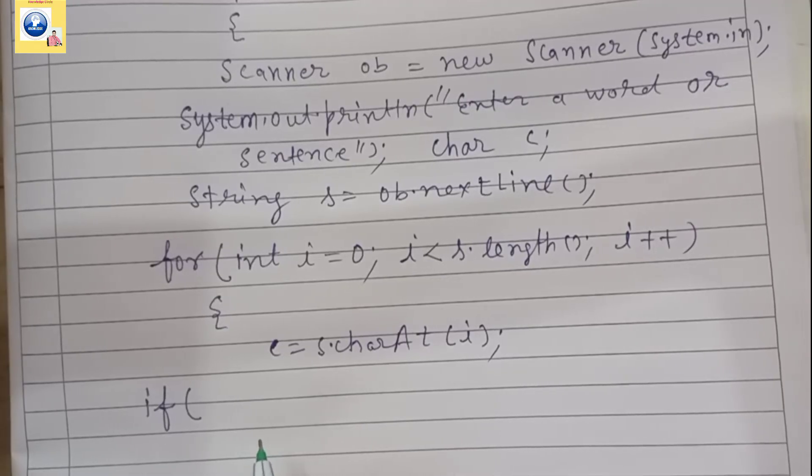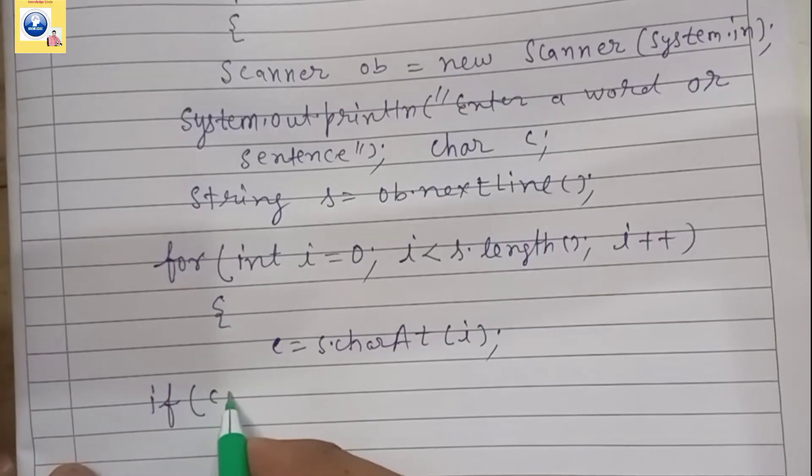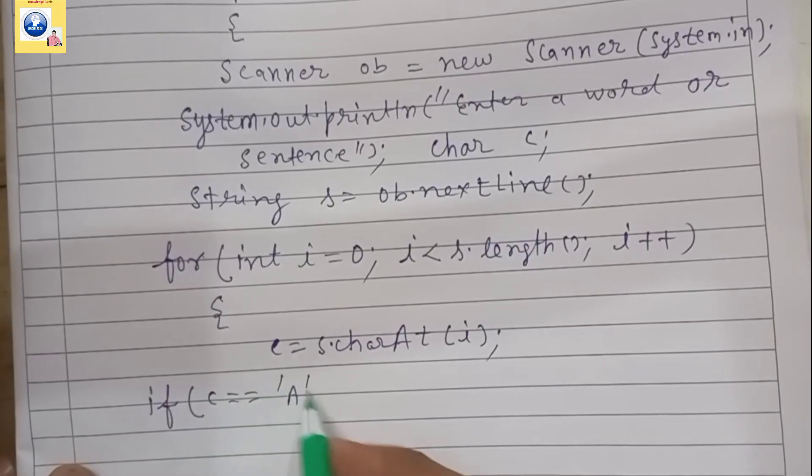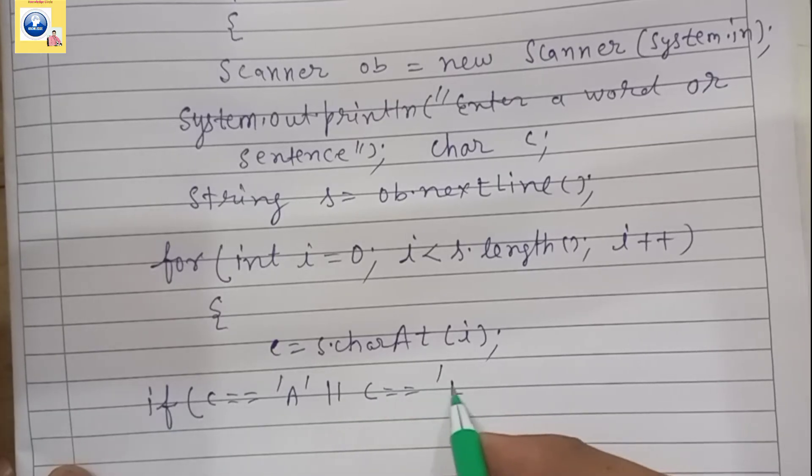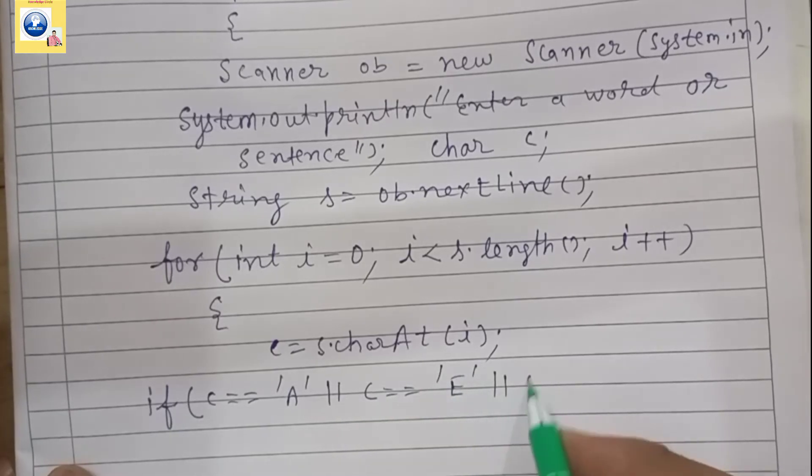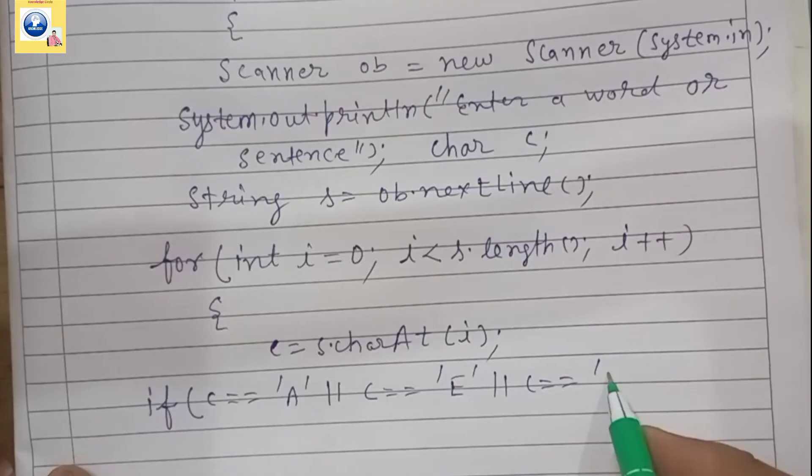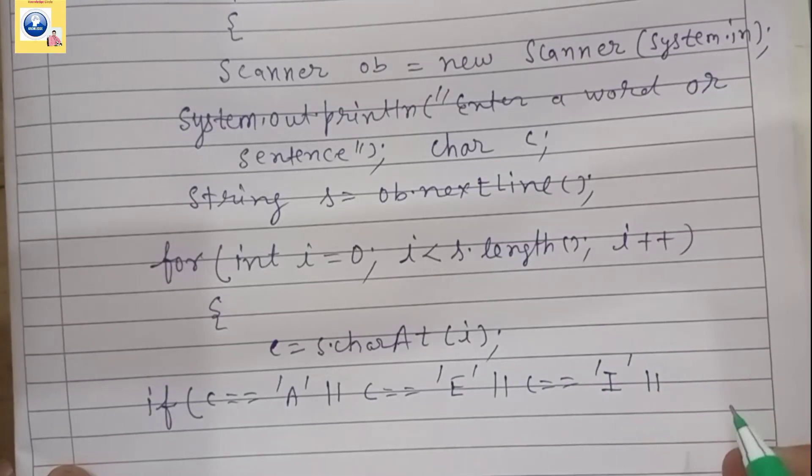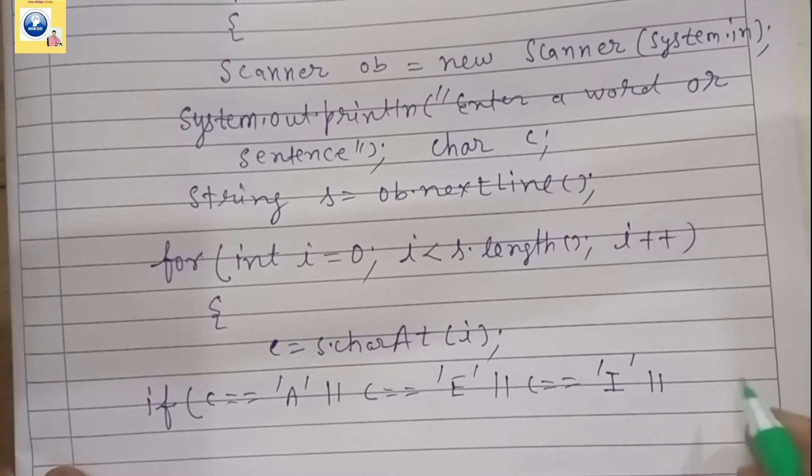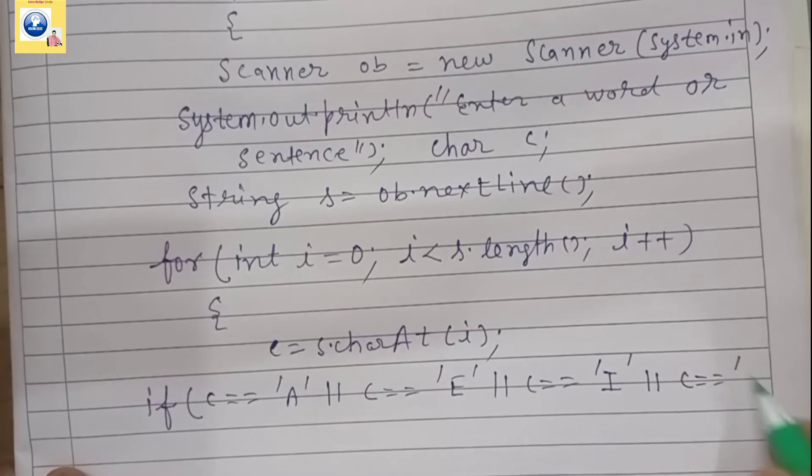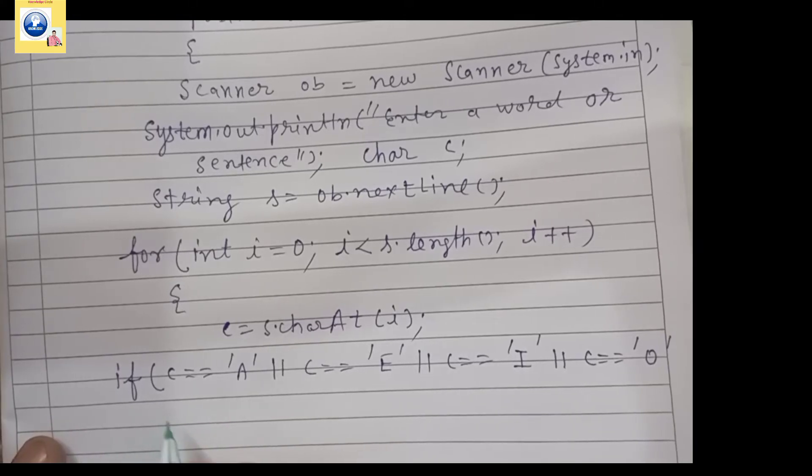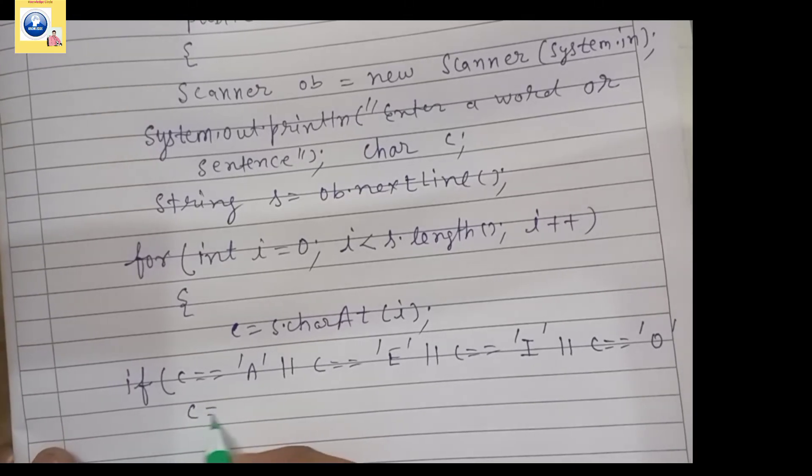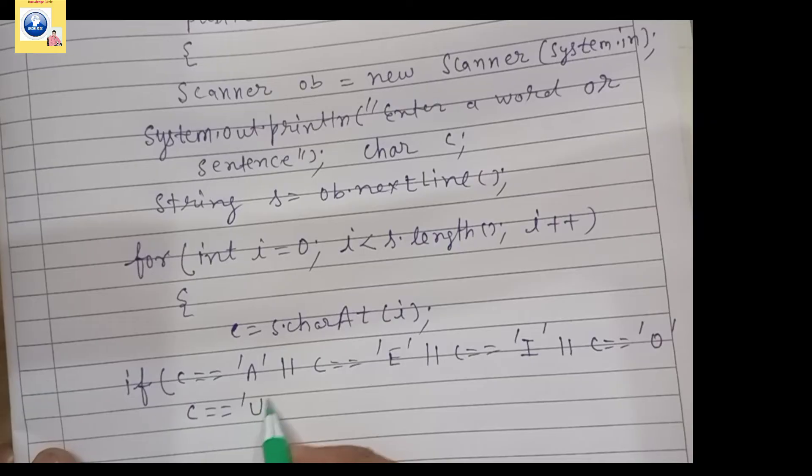Now we have to look for vowels. We don't know if the user has written the string in capital letter or small letter. So that's why we will check here if c equals 'A' or if c equals 'E', if c equals 'I', again we will write or operator and if c equals 'O', and if c equals 'U'.